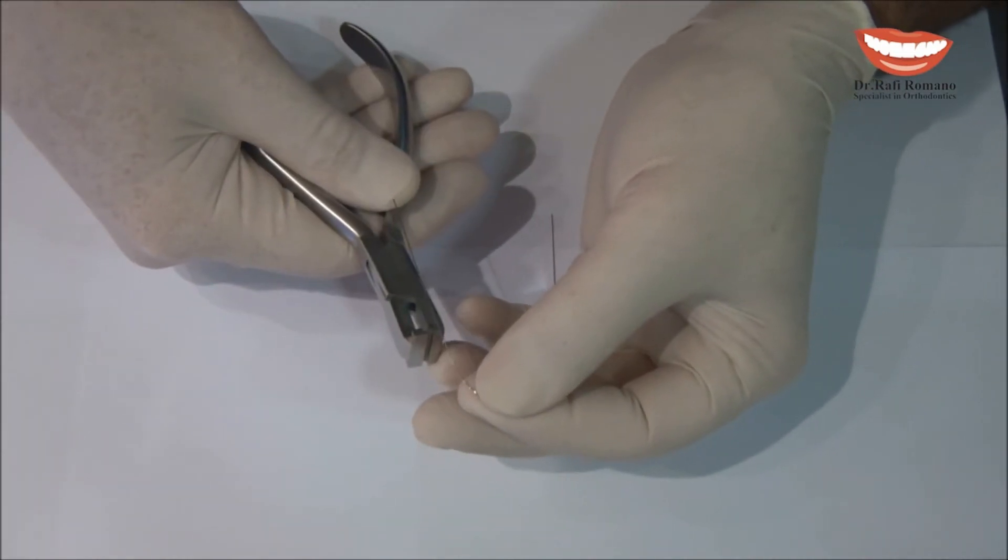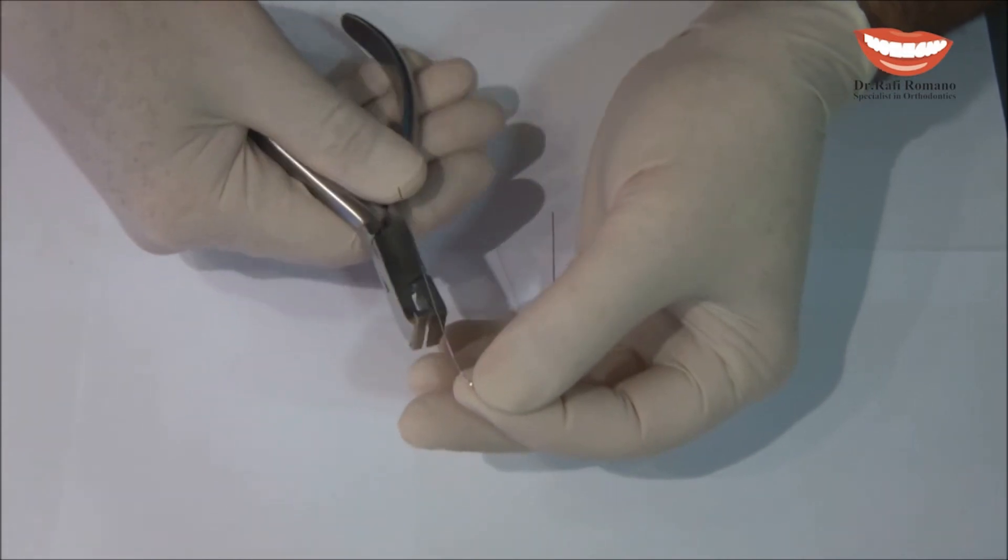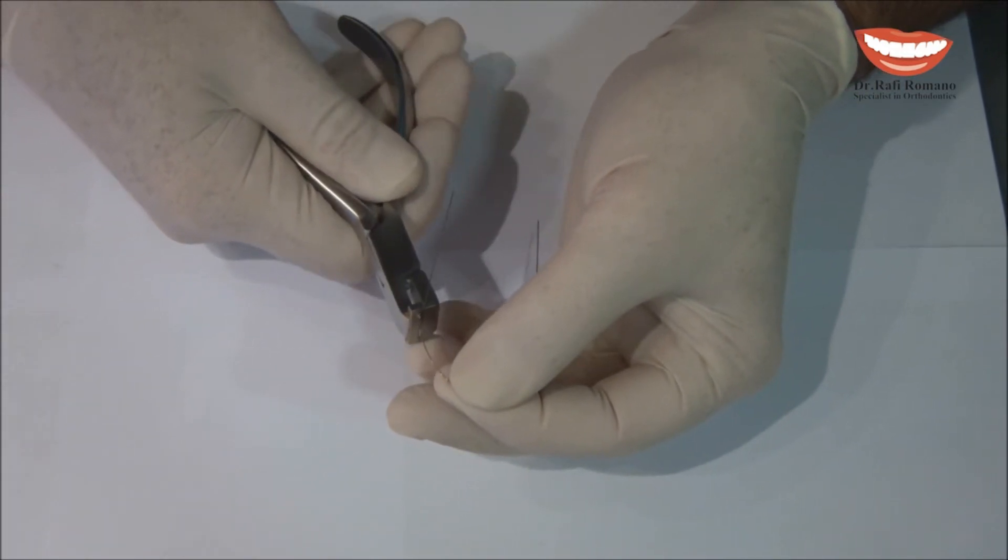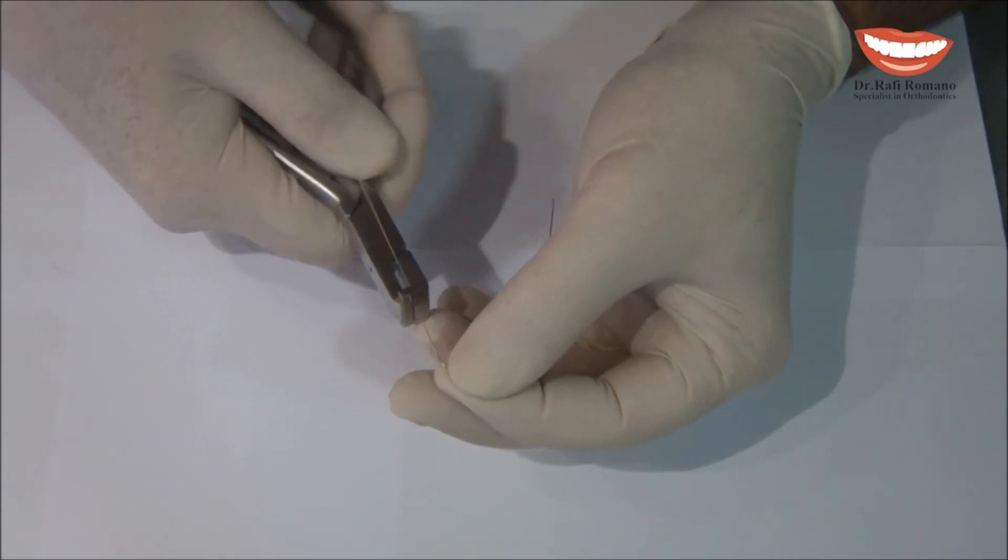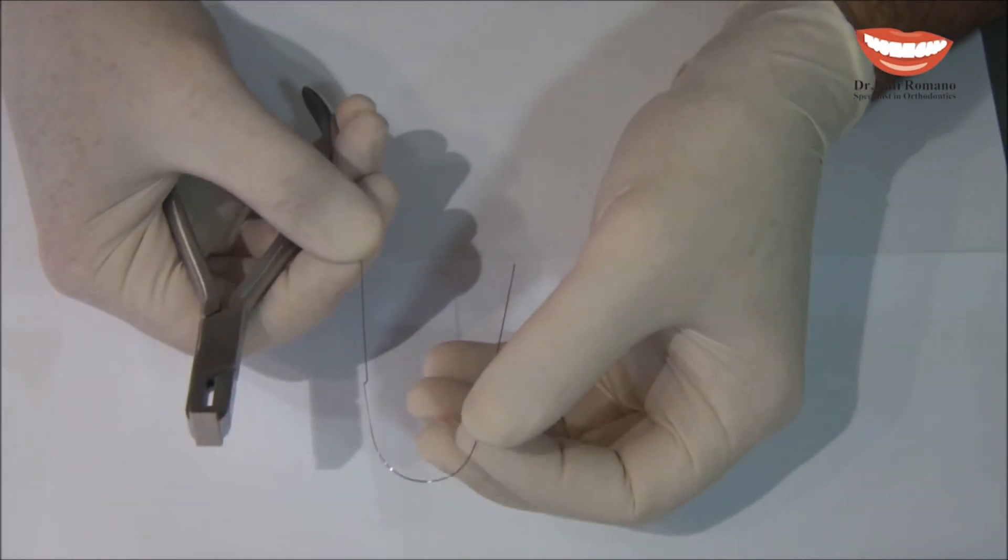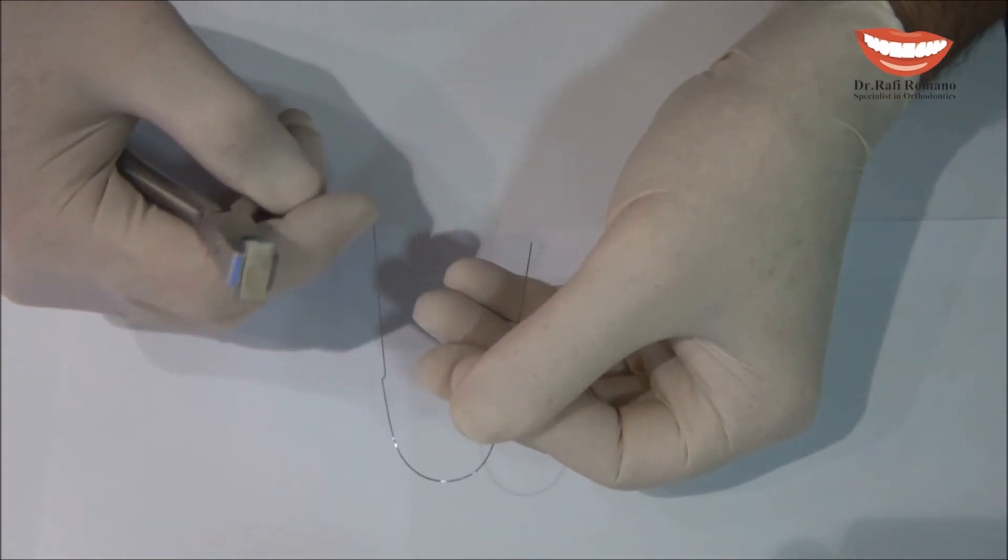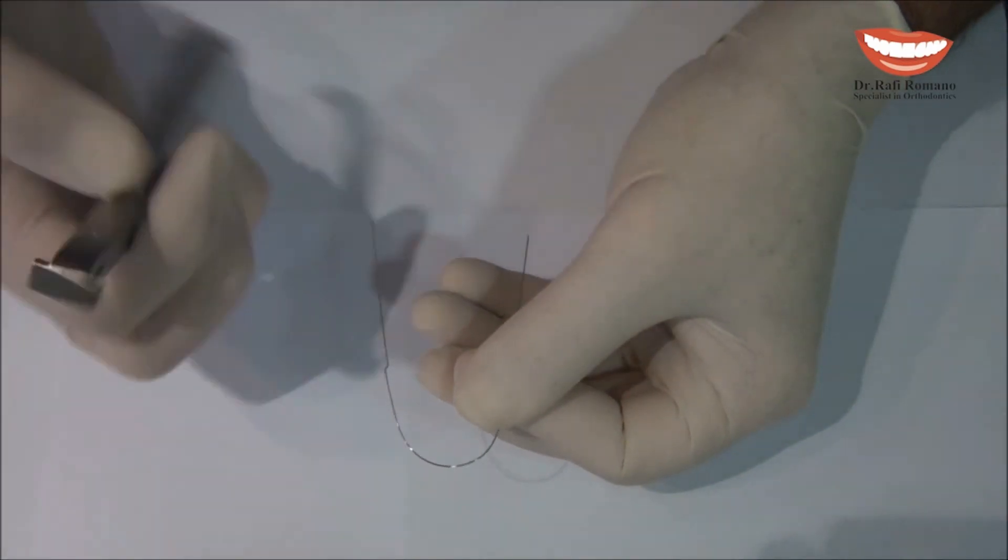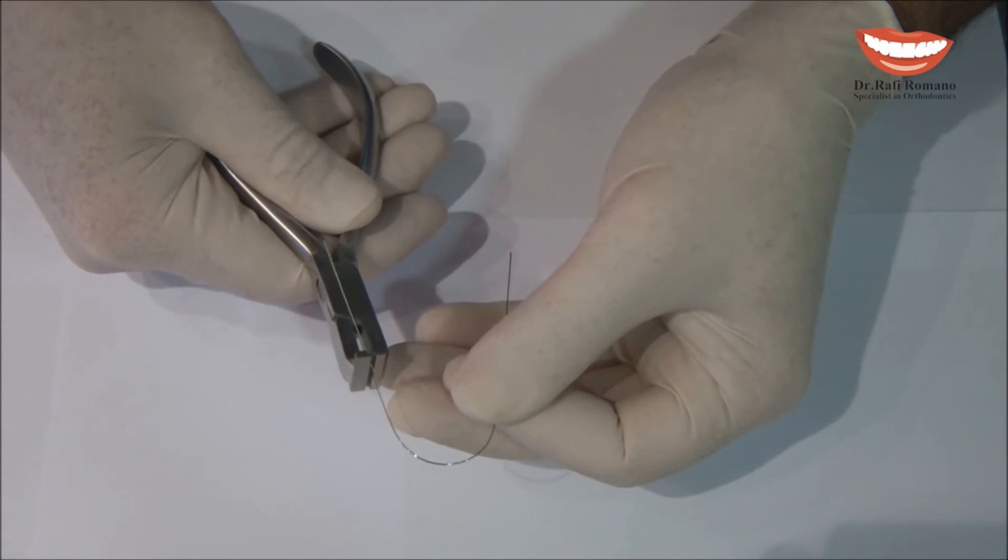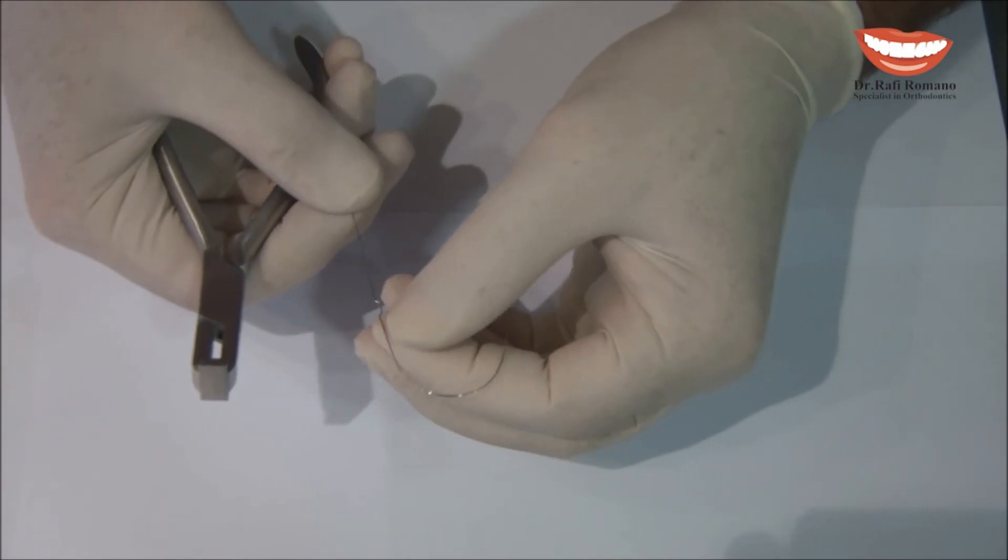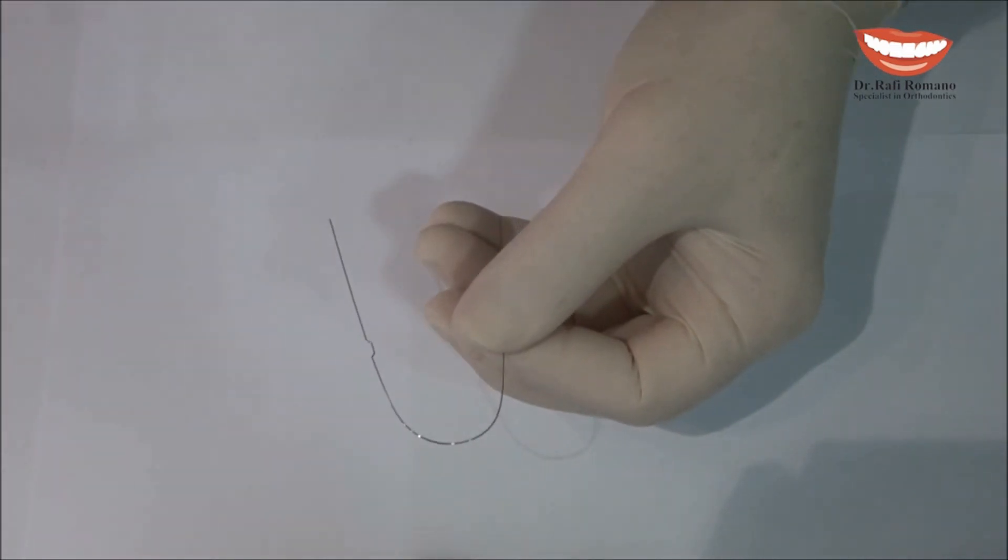We hold it wherever you want to make the step. As you can see, it creates a step and leaves the two parts of the wire parallel. Then we go to the other side of the plier and create the other side of the step.